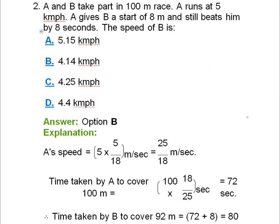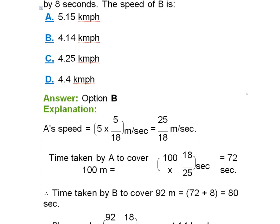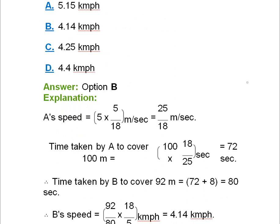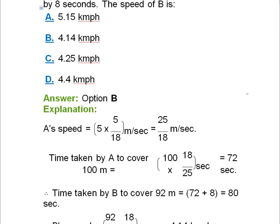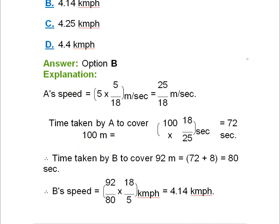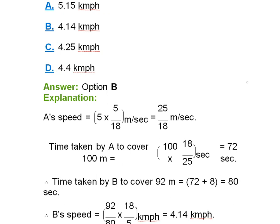Time taken by A to cover 100 meters is 100 × (18/25), which equals 72 seconds. B covers 92 meters (since A gives B an 8-meter start), and B's time is 72 plus 8, which is 80 seconds since A beats him by 8 seconds. The speed of B is calculated as (92/80) × (18/5) km/h, which equals 4.14 km/h — option B. If you're confused about time, speed, and distance, we have already covered those in our train problems videos.